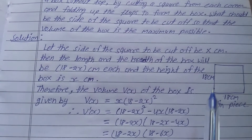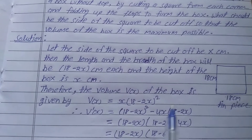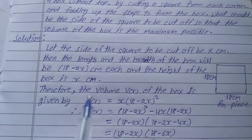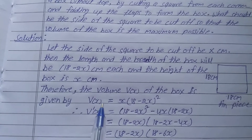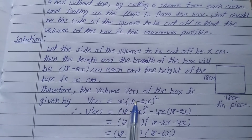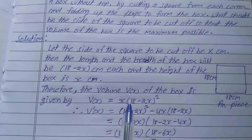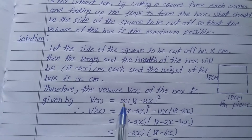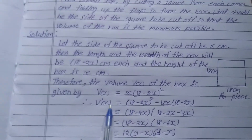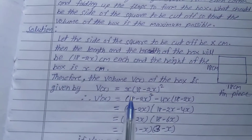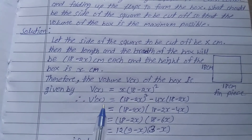The square piece given is 18 centimeters. Therefore the volume V(x) of the box is given by V(x) = x times (18 minus 2x) squared, since height is x and both length and width are equal to 18 minus 2x. Now we differentiate V(x) with respect to x to find V'(x).